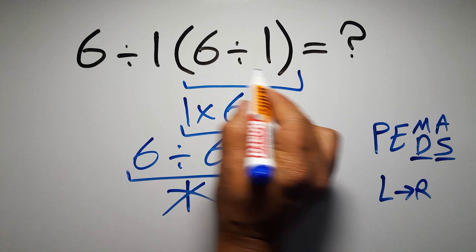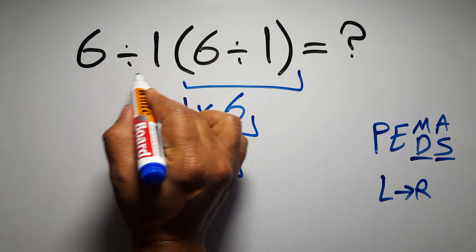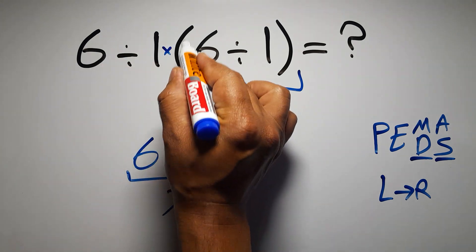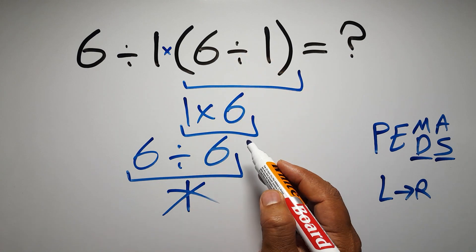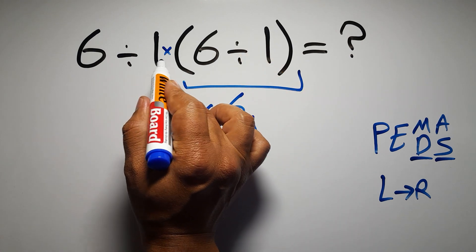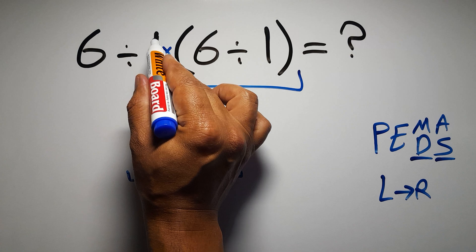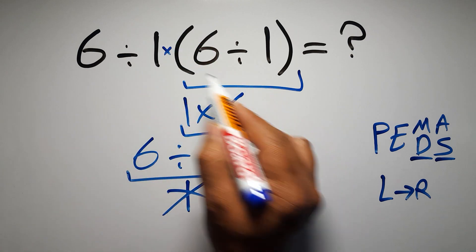In this expression we have one division, one multiplication, and one parentheses. Inside these parentheses we have one division. Here we have a multiplication because in mathematics when a number is placed next to parentheses it means multiplication.